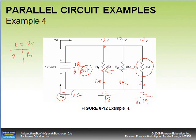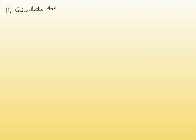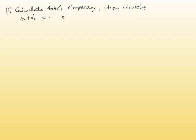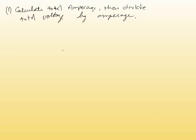Let's recap the methods to find total resistance. First: calculate total amperage, then divide total voltage by total amperage — that may be the easiest way.